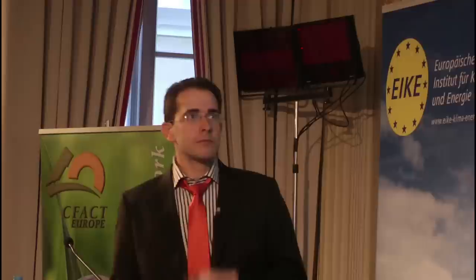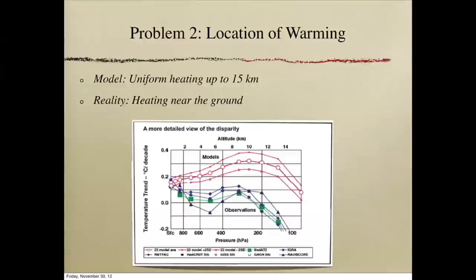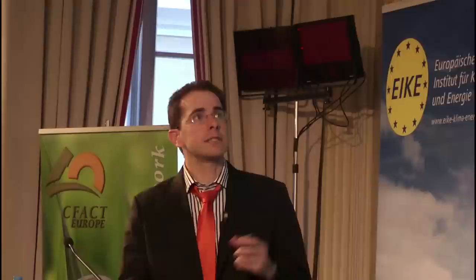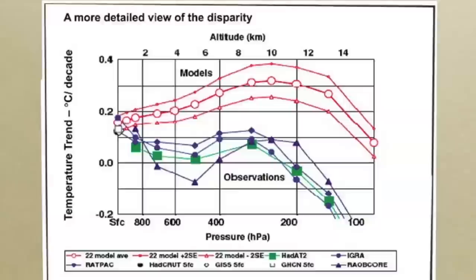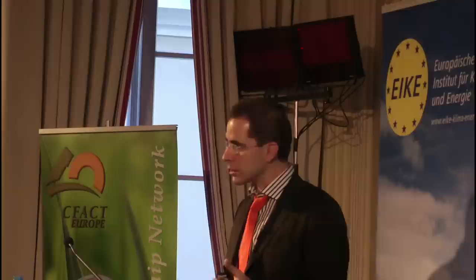Another problem is that the models predict a warming pattern you don't see in reality. The models predict that most of the warming should be around 10 kilometers altitude and that warming should be greater over the subtropics than the tropics. But what you see in reality from radiation data is that the warming at higher latitudes is lower than what the models predict. So if you think CO2 has a fingerprint for detecting different warmings, what you see in reality doesn't fit the model predictions.